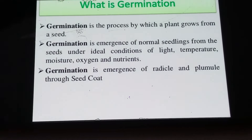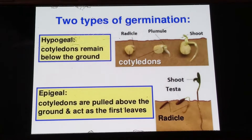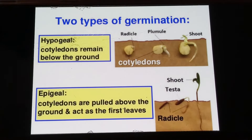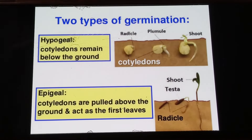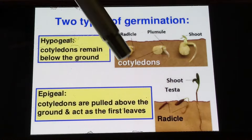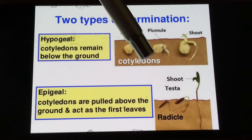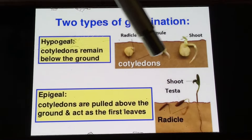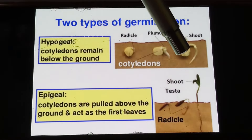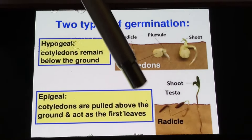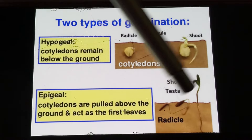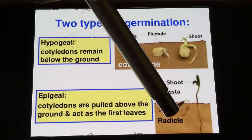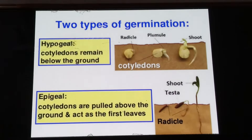There are two different types of germination: hypogeal germination and epigeal germination. As you can see from the figure, in hypogeal germination the cotyledon remains below the soil throughout the process of germination, whereas in epigeal germination, once the process starts, the cotyledon is pushed above the soil.